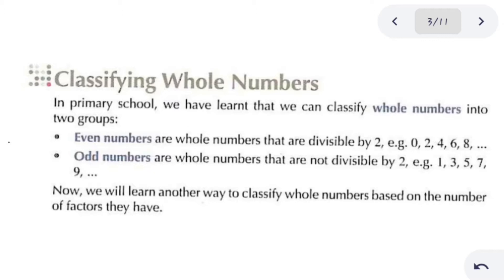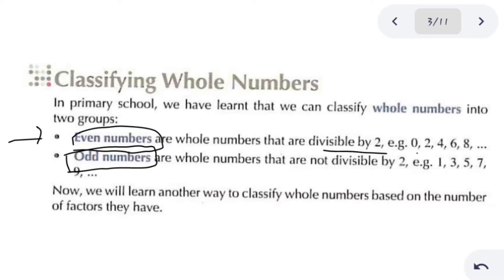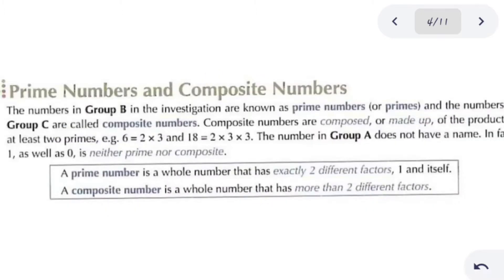In previous classes we also divided numbers into two basic groups: even numbers and odd numbers. Even numbers are those divisible by 2, such as 0, 2, 4, 6, and 8. Numbers which are not divisible by 2 are called odd numbers.